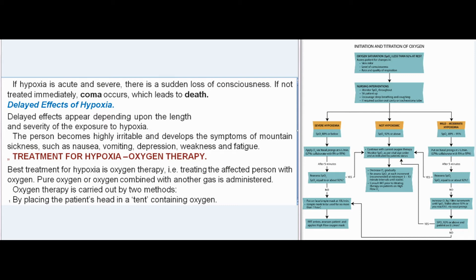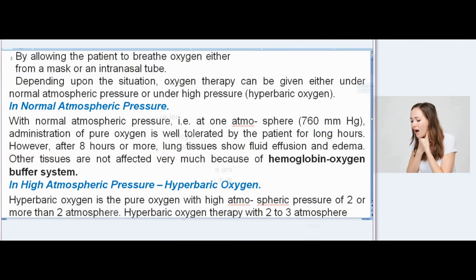The best treatment for hypoxia is oxygen therapy, i.e., treating the affected person with oxygen. Pure oxygen or oxygen combined with another gas is administered. Oxygen therapy is carried out by two methods: placing the patient's head in a tent containing oxygen, or allowing the patient to breathe oxygen from a mask or intranasal tube. Depending upon the situation, oxygen therapy can be given under normal atmospheric pressure or under high pressure (hyperbaric oxygen).